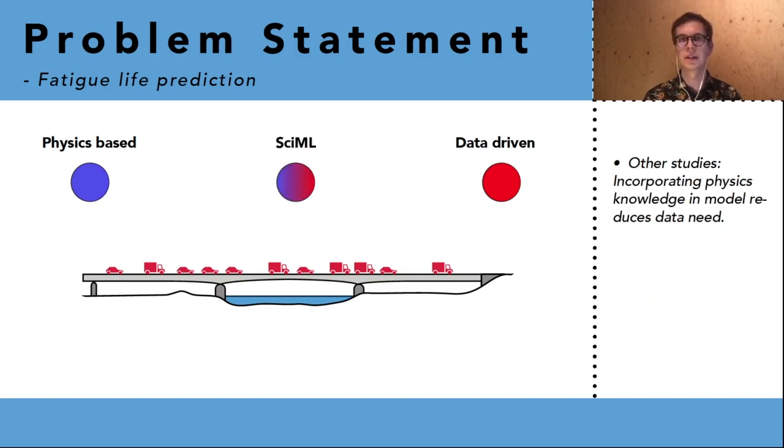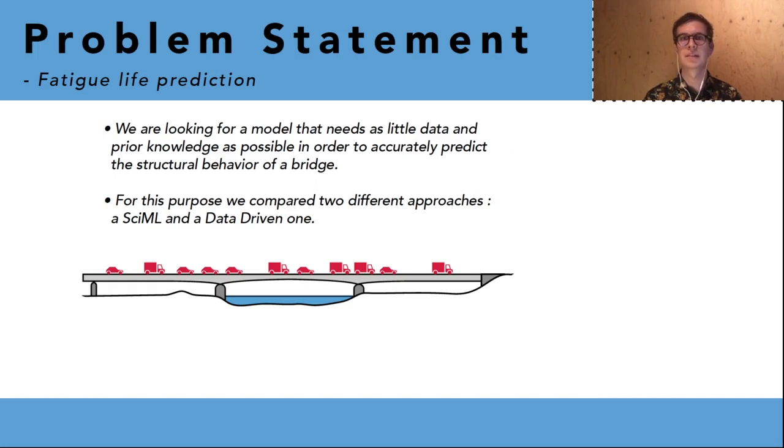Scientific machine learning combines a data-driven model with physical knowledge and this has been shown in other studies to reduce the data need for the model. And we are interested in a model that needs as little data and as little prior knowledge as possible in order to accurately predict the structural behavior of a bridge.